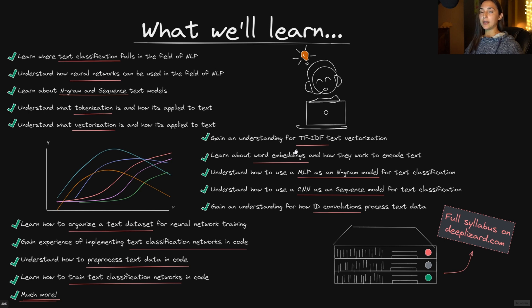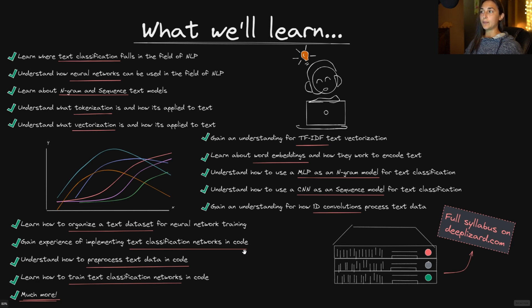We'll spend time learning about a specific type of vectorization process called TF-IDF encoding, and we'll also learn about word embeddings and embedding layers and how they work to encode text data. We'll then see how various neural network architectures — such as multi-layer perceptrons and convolutional neural networks — can be used as n-gram models and sequence models for text classification. We'll also gain an understanding of how one-dimensional convolutions within a convolutional layer work to process text data. Once we get to our project implementation, we'll learn how to organize a text dataset for neural network training, build text classification models in code, apply preprocessing steps in code, and train and evaluate our networks.